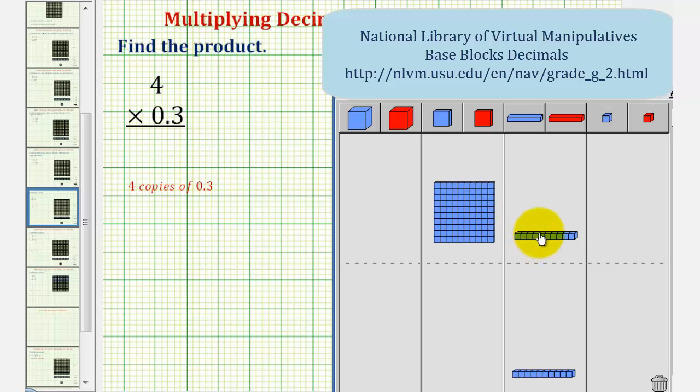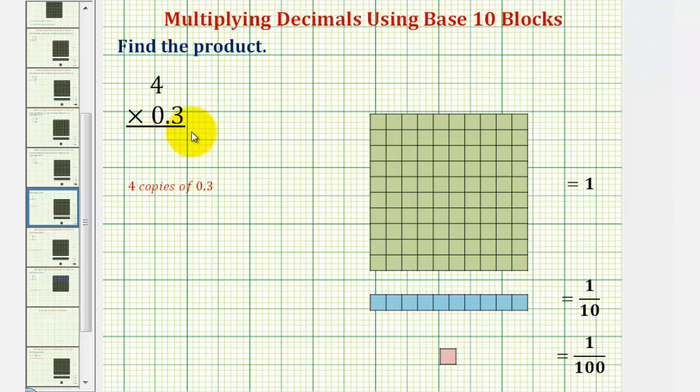So now we have a total of one flat and two longs, which would be one plus two tenths, or one and two tenths. And therefore, four times three tenths is one and two tenths.